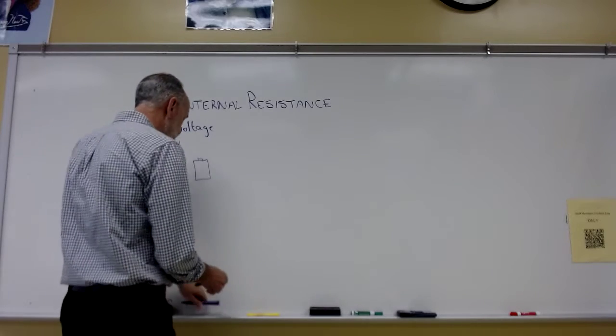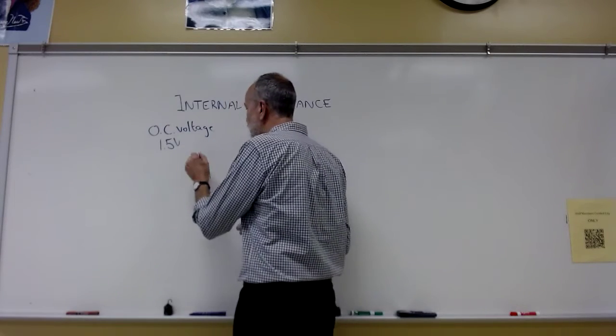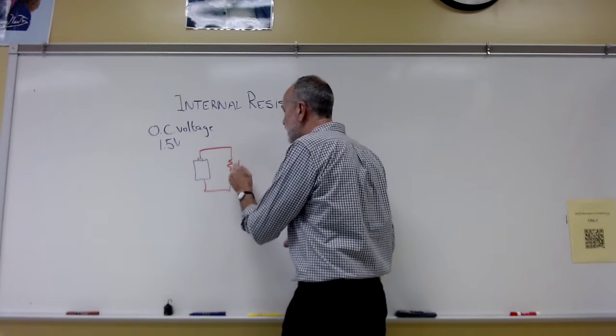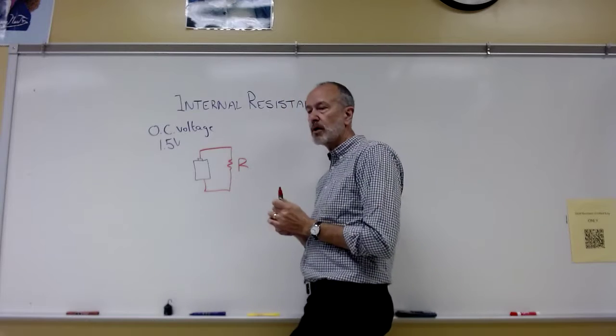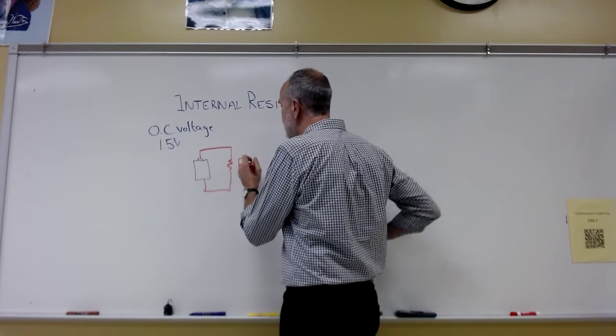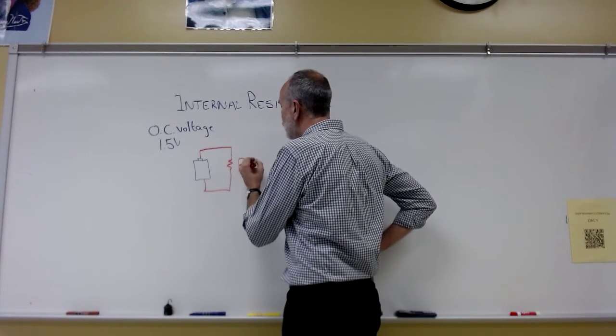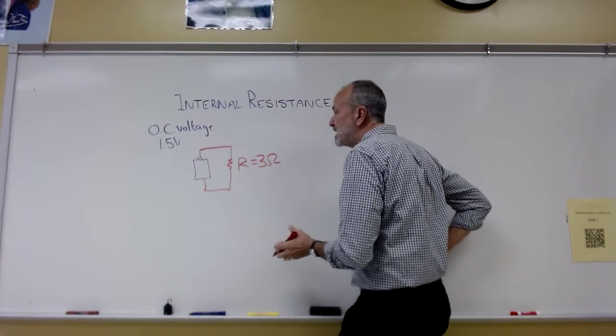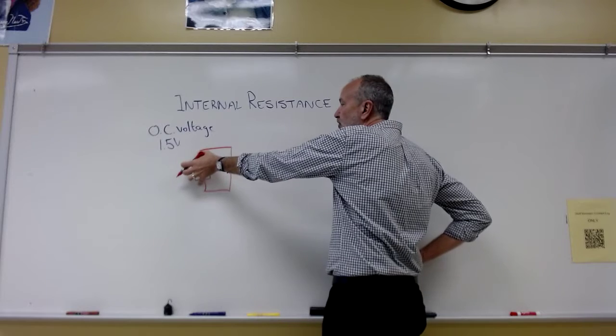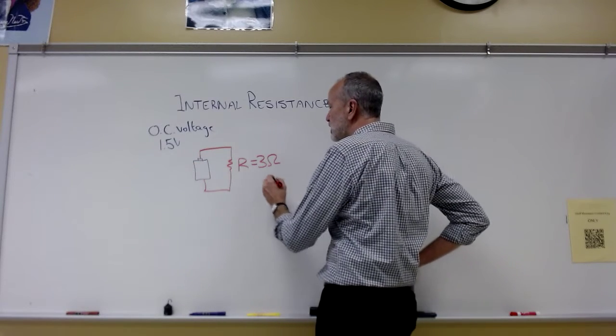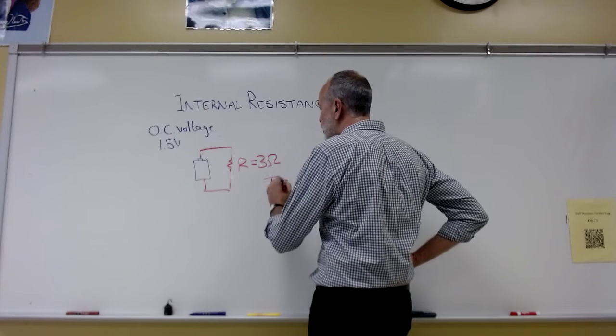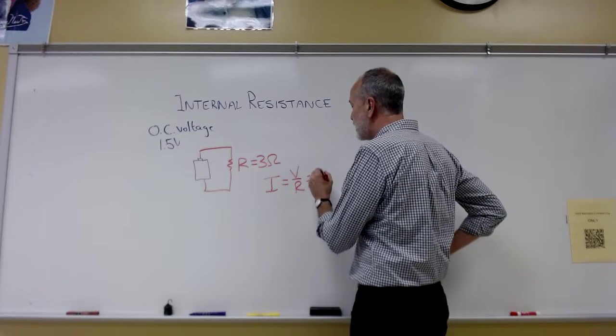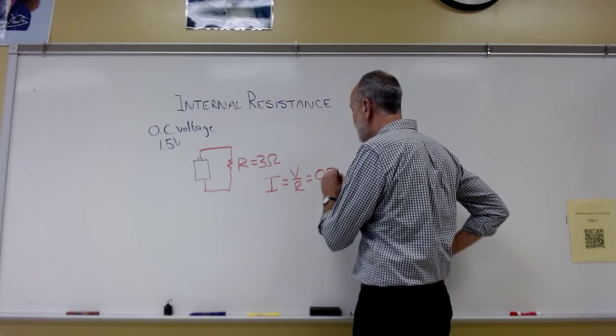Now, let's hook it up to a circuit, and this could be a really easy circuit, and that's R. And let's say that R is 3 ohms. Now, if we said this is 1.5 volts, and that 1.5 volts is across 3 ohms, we could use Ohm's Law, V over R, and we'd see 1.5 divided by 3 is 0.5 amps.